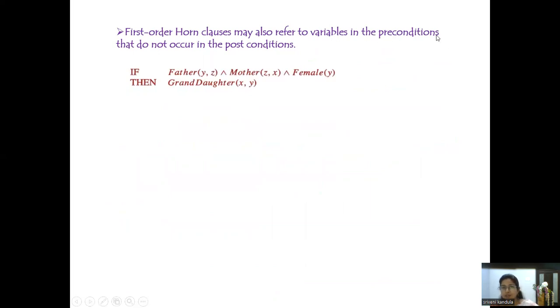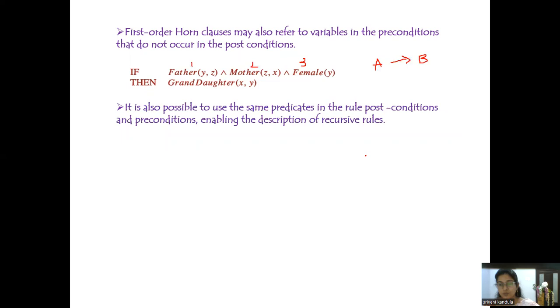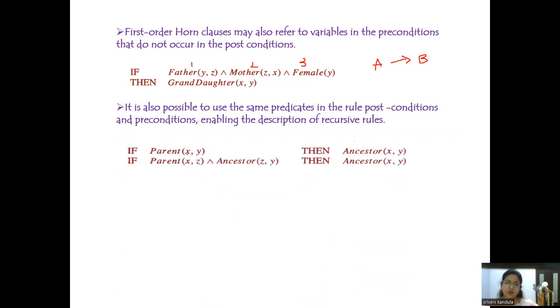In first order horn clauses, sometimes a variable appearing in the precondition may not be in the postcondition. For example, Z appears only in the precondition. In an expression like A implies B, the left-hand side is the precondition and the right-hand side is the postcondition. Sometimes the same variable — like X and Y — may appear in both pre- and postconditions, which is useful for recursive rules.